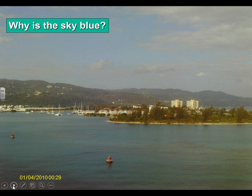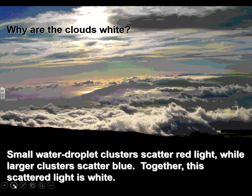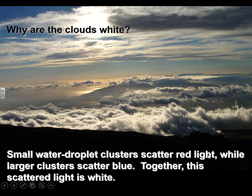Why is the sky blue? The sky is blue because small wavelength light — the blue-green light from the sun — is scattered by very small particles of dust, especially oxygen and nitrogen in the atmosphere. A lot of it gets scattered, so that's why you see the blue, while the rest gets absorbed. Clouds are white because small water droplet clusters scatter the red light while larger clusters scatter the blue. Together, this scattered light is white because you get a little of the red and blue-green light, and the combination of red, blue, and green gives white.